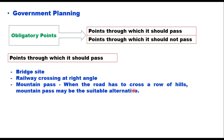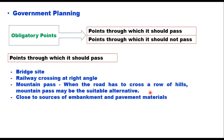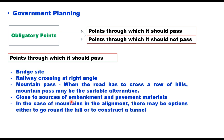Mountain pass is another positive obligatory point. When a road has to cross a row of hills, a mountain pass may be a suitable alternative — it is a route that allows travel through a mountain range or over a ridge, and it is better to follow the control line to reach higher elevation. Additionally, road alignment should be close to sources of embankment and pavement materials to remain economical. In mountain areas, the alignment considers whether to go around a hill or construct a tunnel, choosing the more economical option.